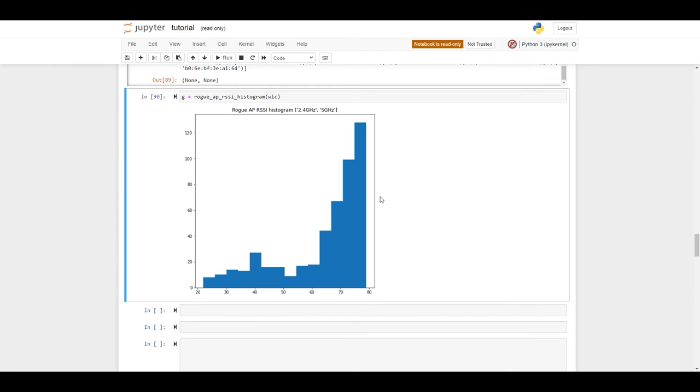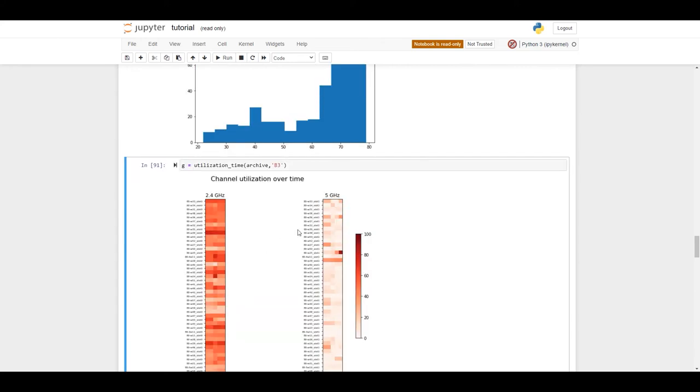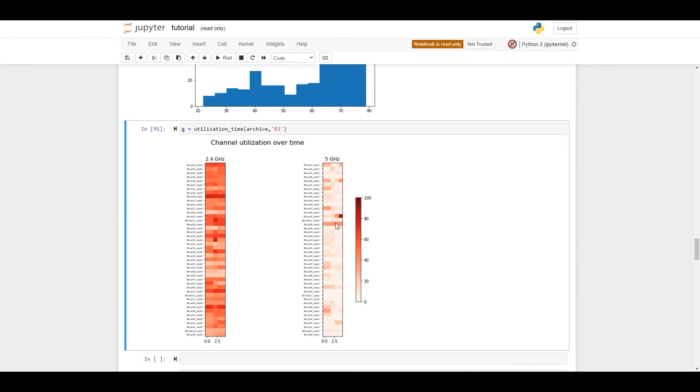Now, as a third example, let's see how the channel utilization changes in time. Wireless guys know how important this parameter is for the network performance. By using the function UtilizationTime, we can display the heatmap of the channel utilization. Let me print it here for you and see the result. Every horizontal line here is our access point in our network. The more saturated color, the busier is its channel. Devices which do not change its saturated color need our attention because the clients connected to them may suffer from the performance issues.